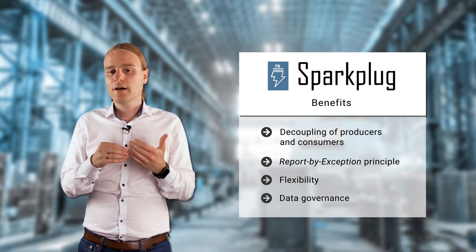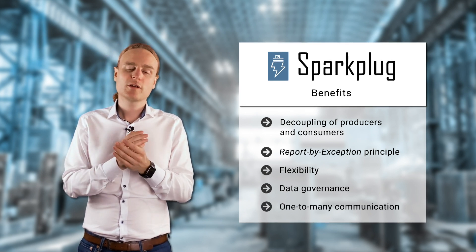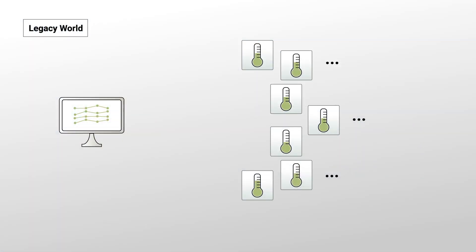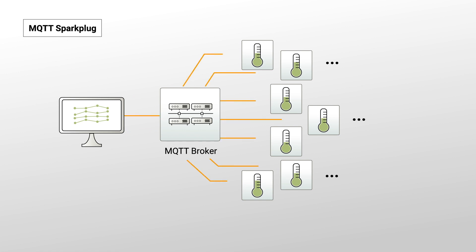And there is one-to-many communications. Every time data is published to the infrastructure, multiple applications can consume that information. In the old legacy world, different systems would pull the same sensor or the same PLC multiple times, causing unnecessary load. With Sparkplug, you send the data once to the MQTT infrastructure and can have multiple consumers — one data packet in, and you could get 10 data packets out, however many you need.